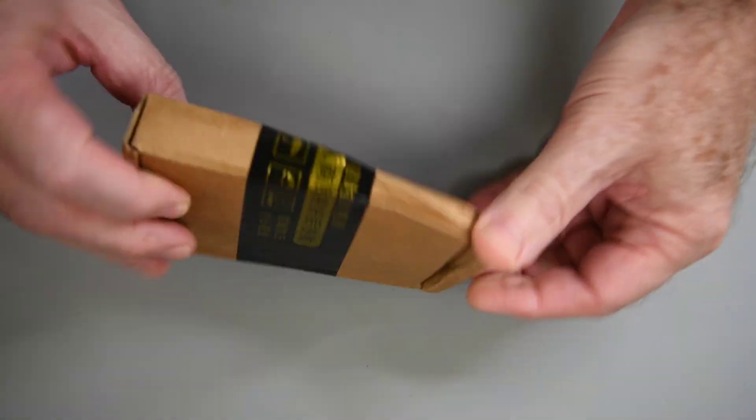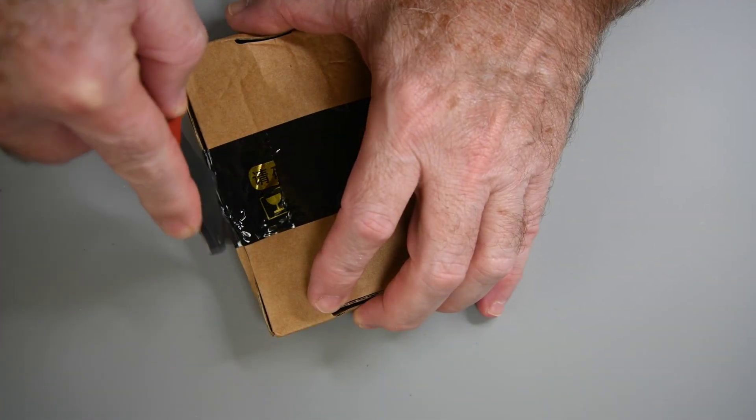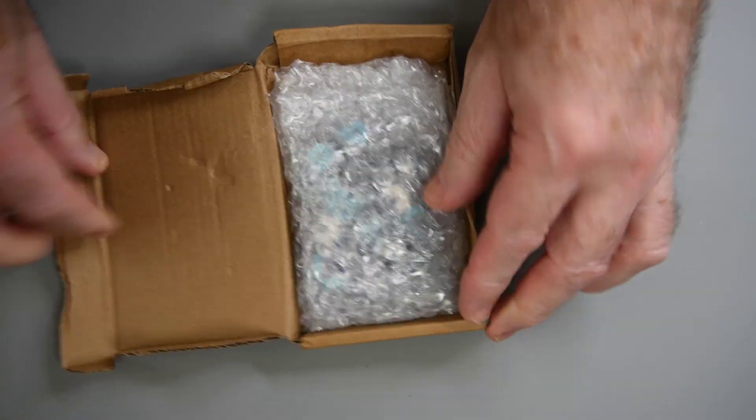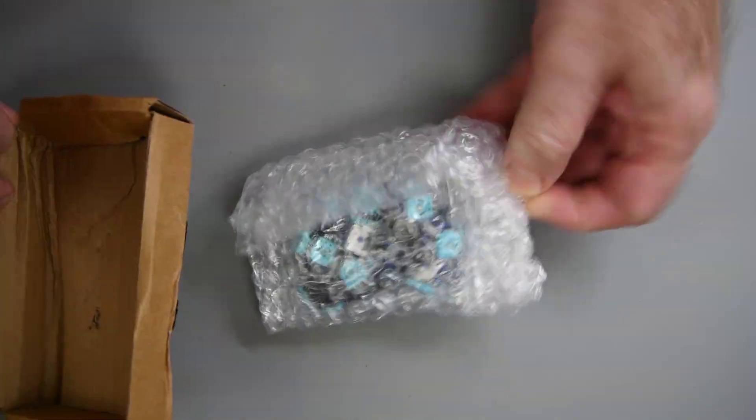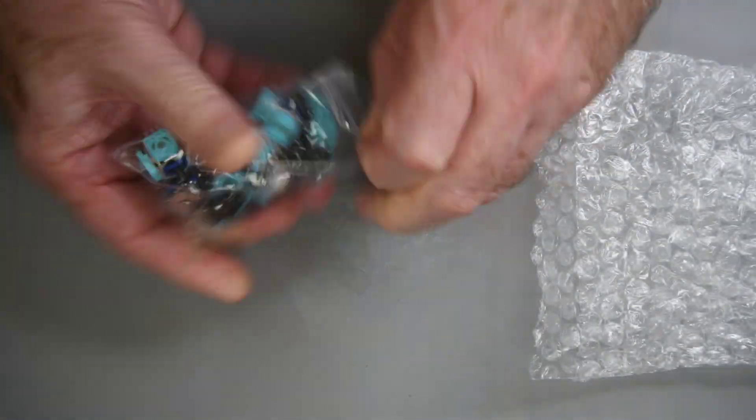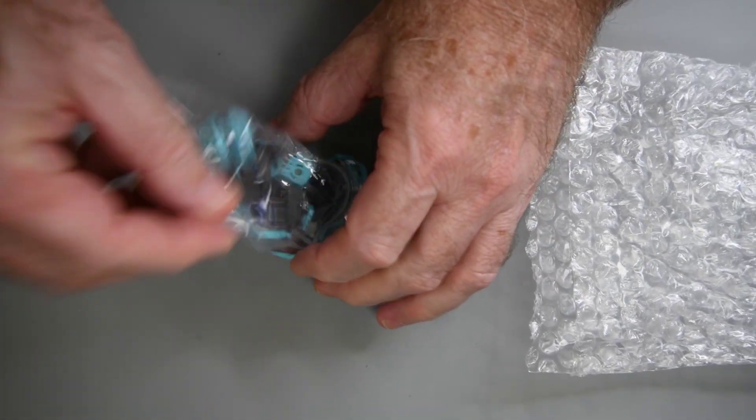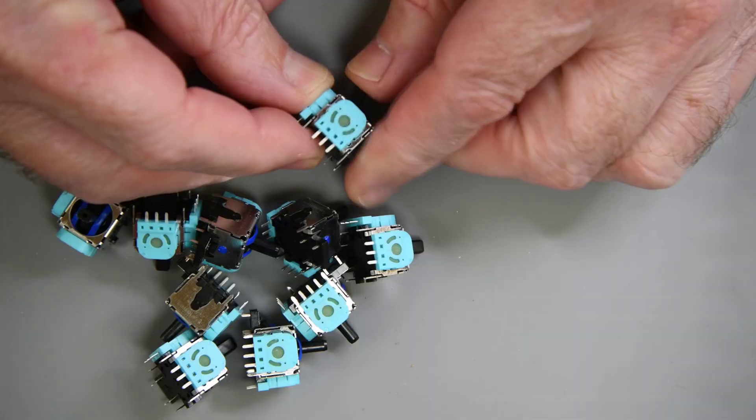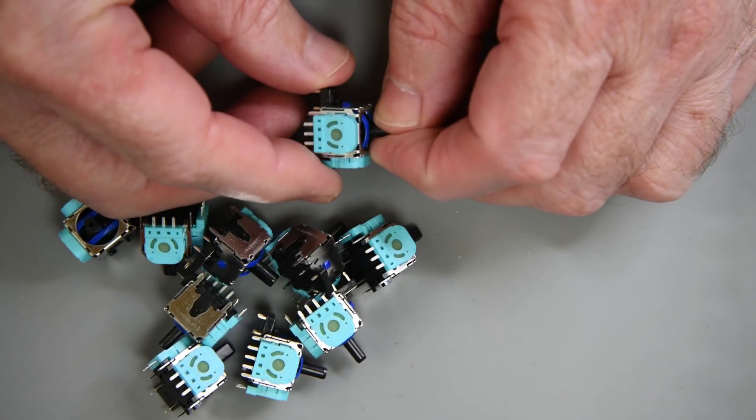This is my third or fourth order from the NH game store. The box got roughed up a bit, I'm sure in transit, but looks like the joysticks are well wrapped in bubble wrap. They look good. I don't see any smashed pins or pins bent out of shape.